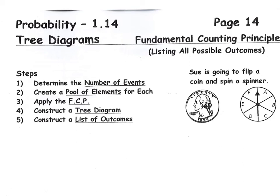Welcome to page 14 of your probability packet. On this page, we will use tree diagrams to list all possible outcomes to events that are going to occur. We'll also be taking a look at the Fundamental Counting Principle. This little rule is going to help us calculate the number of outcomes. Sometimes you'll hear me refer to this as the FCP rule, since it's such a mouthful to say over and over again.